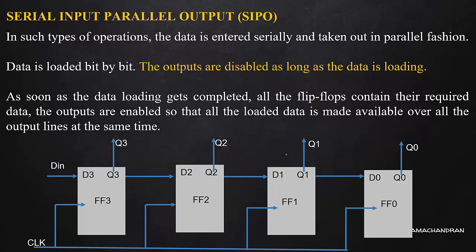This is the serial input parallel output type. In this case, we have 4 flip-flops and 4 bits. This is the serial input. The external input parallel outputs are taken in this case. This is the external input parallel output — here you shift the data in. We use the 4-bit external input for clock pulses and have a full stored value.